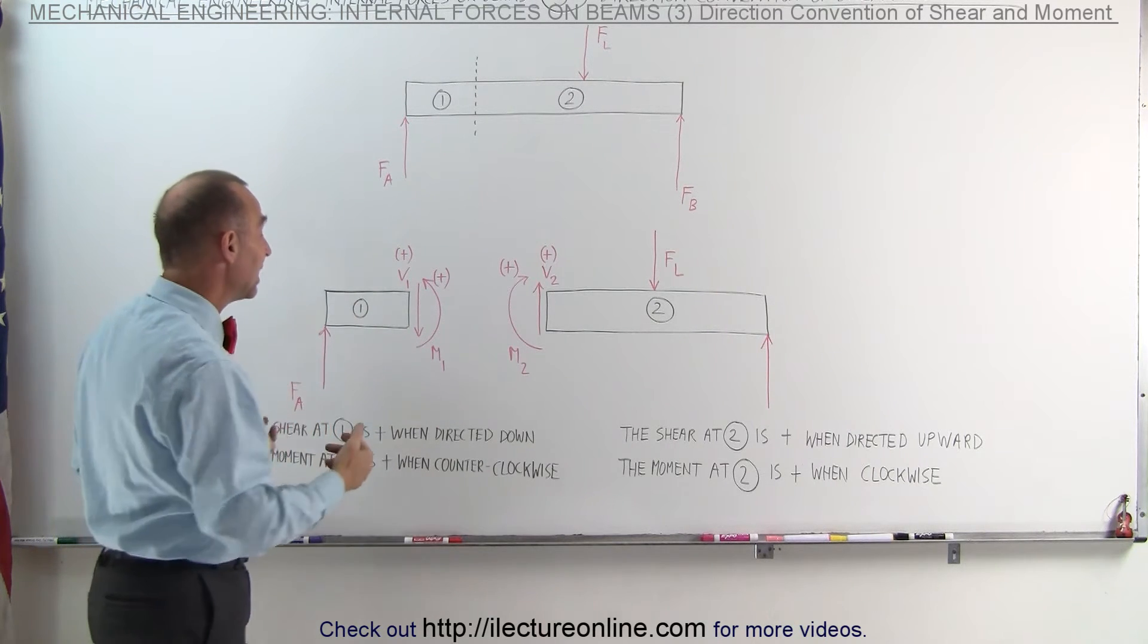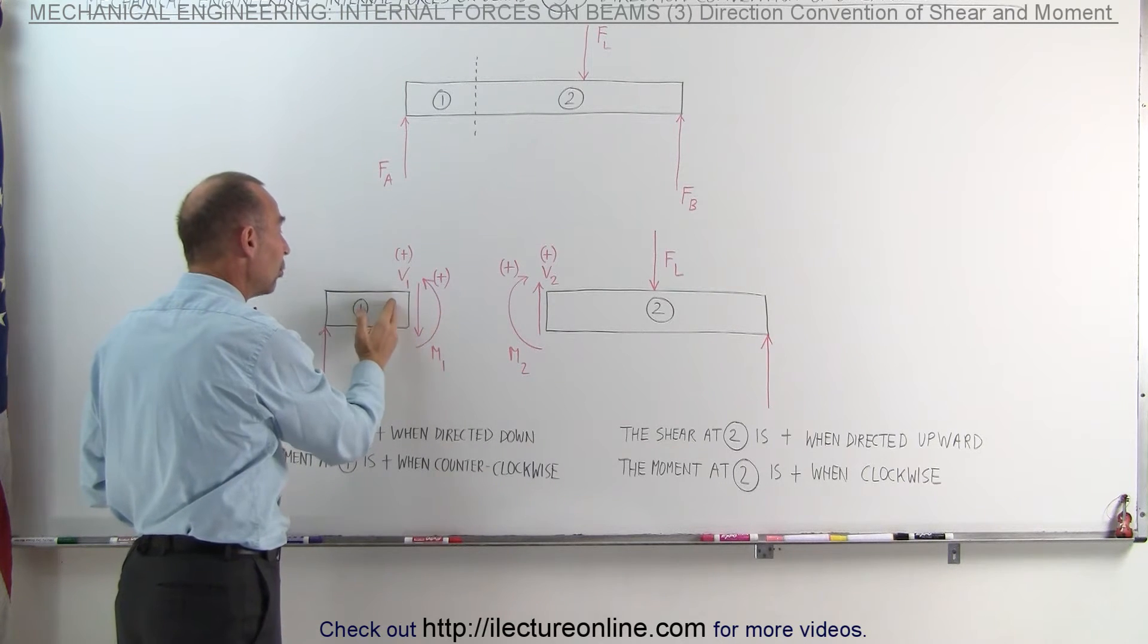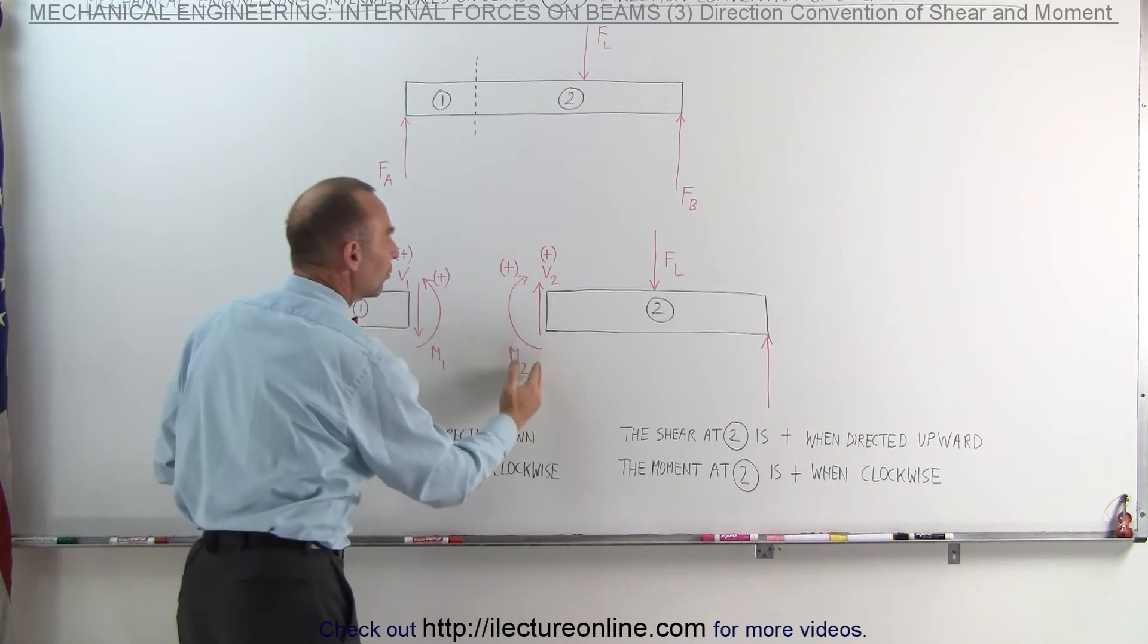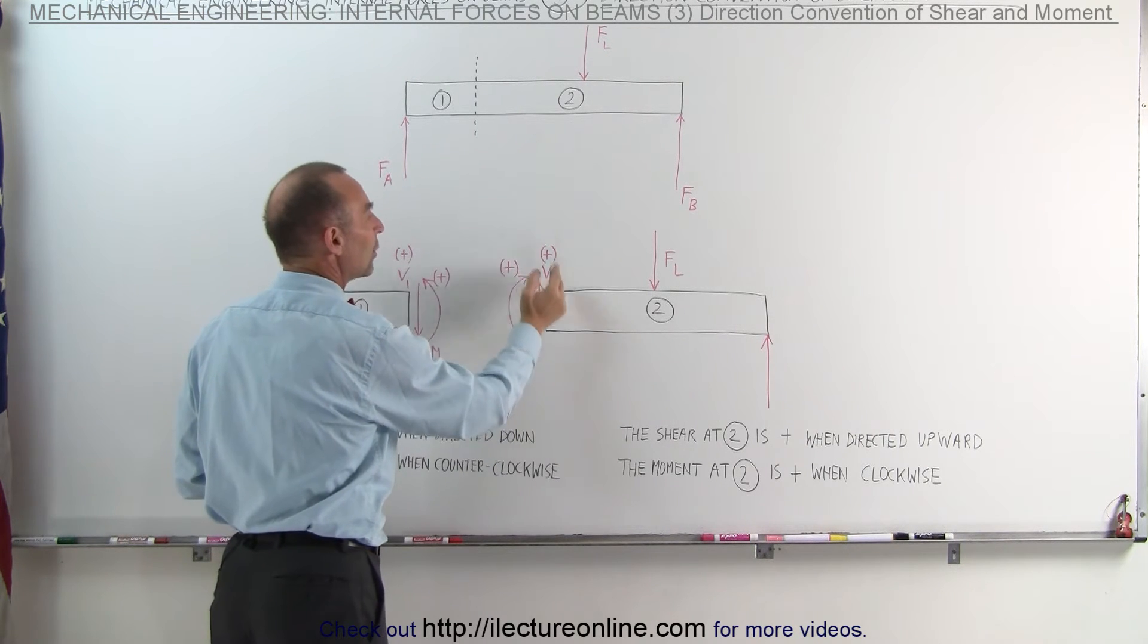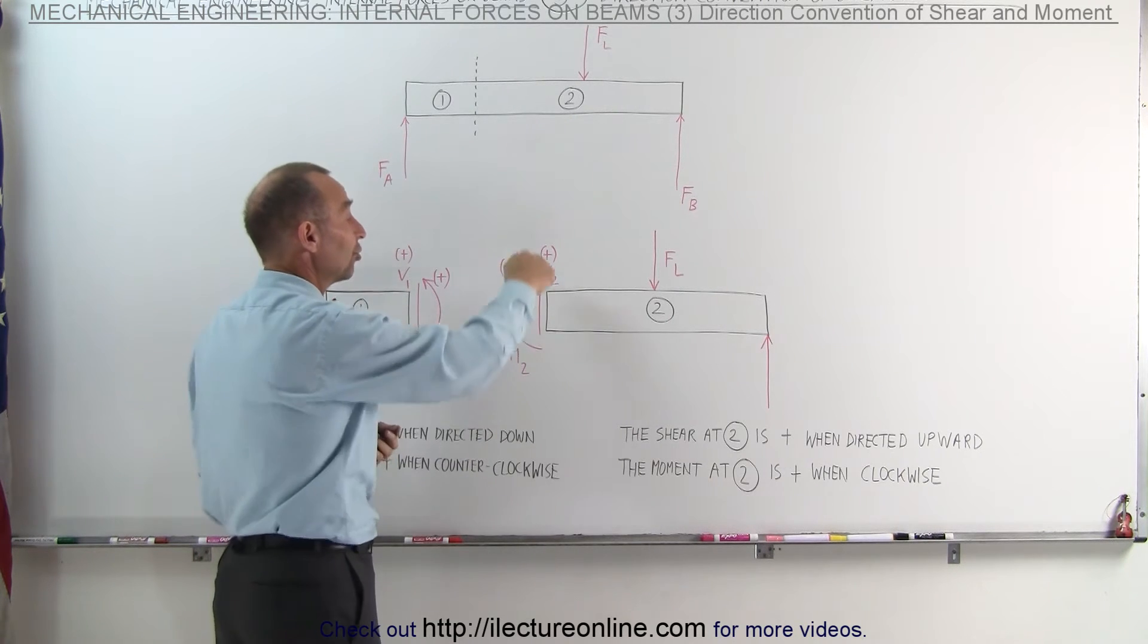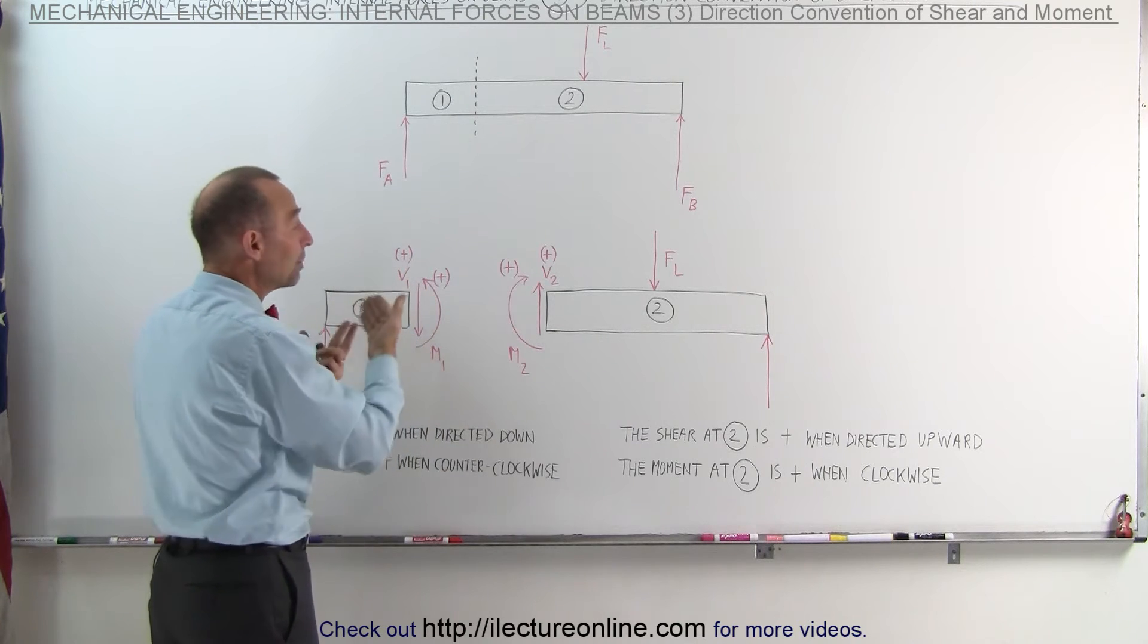By convention, if the shear is downward on section 1, we consider that a positive shear. If the shear is upward on section 2 here, we consider that a positive shear. So in the case that if the shear actually is downward, that would be negative shear. In this case, if the shear is upward, that would be negative shear.